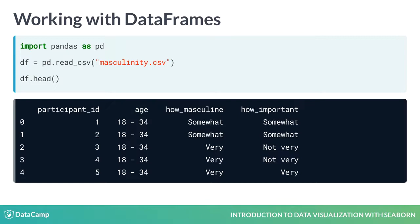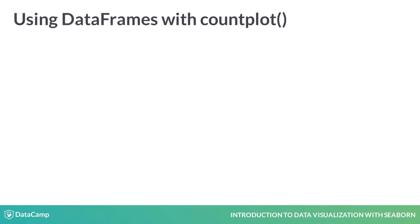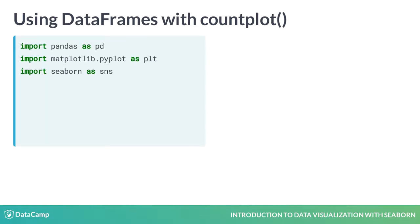Now let's take a look at how to make a countplot with a DataFrame instead of a list of data. The first thing we'll do is import Pandas, Matplotlib, and Seaborn as we have in past examples. Then we'll create a Pandas DataFrame called DF from the masculinity.csv file.